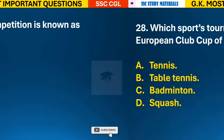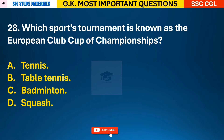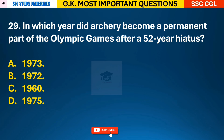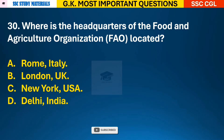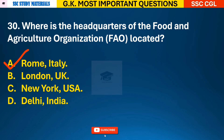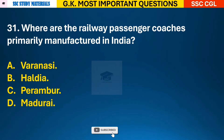Question 27: Which sports competition is known as Rotterdam Open? Answer B - tennis. Question 28: Which sports tournament is known as the European Club Cup of Championships? Answer B - table tennis. Question 29: In which year did archery become a permanent part of the Olympic Games after a 52-year hiatus? Answer B - it was in the year 1972. Question 30: Where is the headquarters of the Food and Agriculture Organization (FAO) located? Answer A - it is located in Rome, Italy.